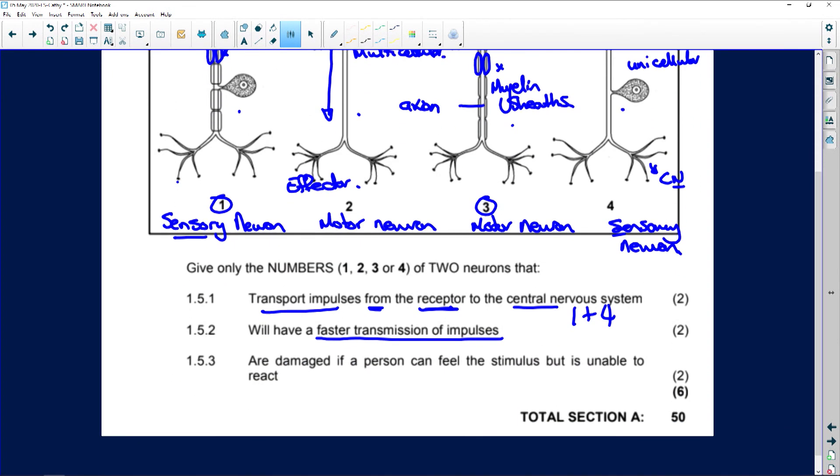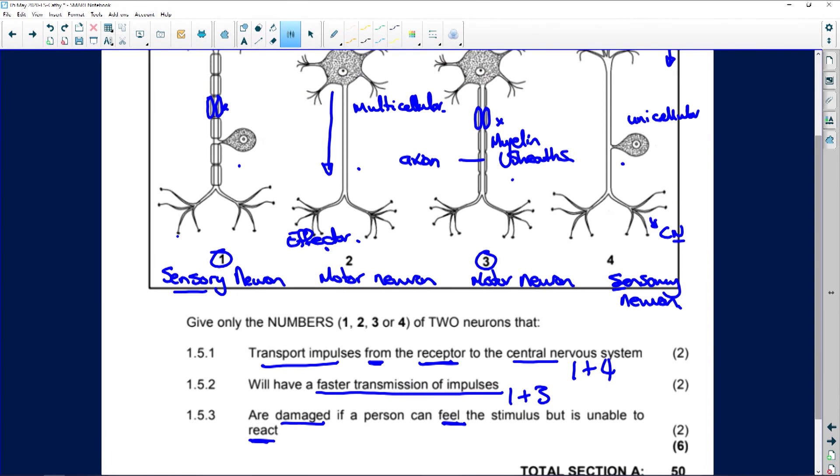So, one and three are damaged. If a person can feel the stimulus, which means the sensory neurons are working, but is unable to react, which means the effector is not going to get the message, that means it will be two and three. Your motor neurons will be damaged.